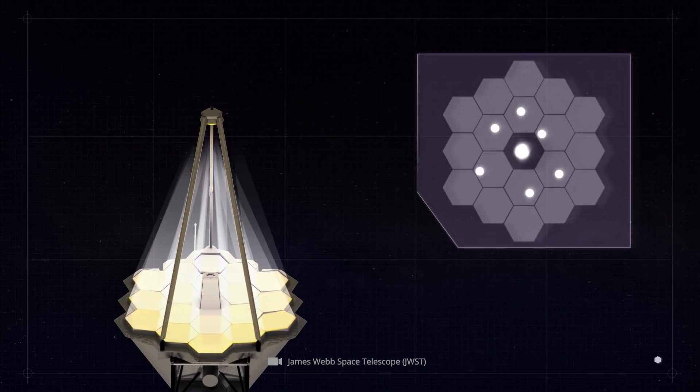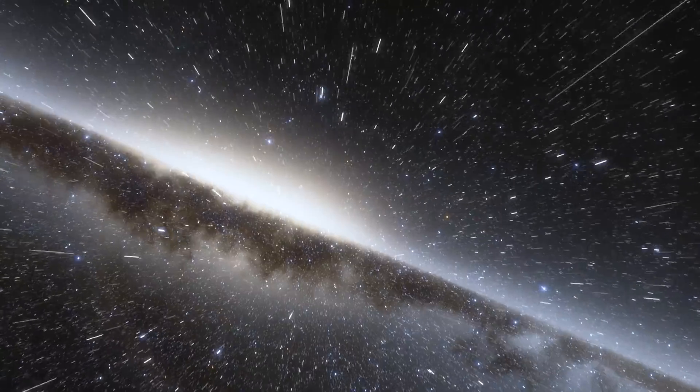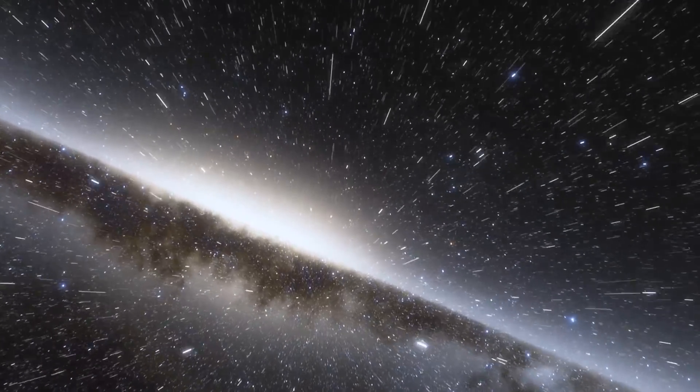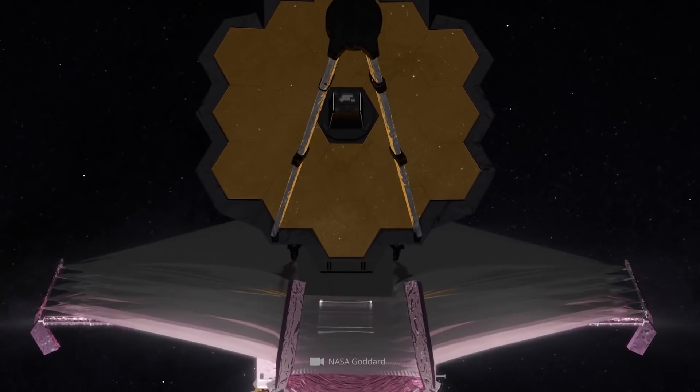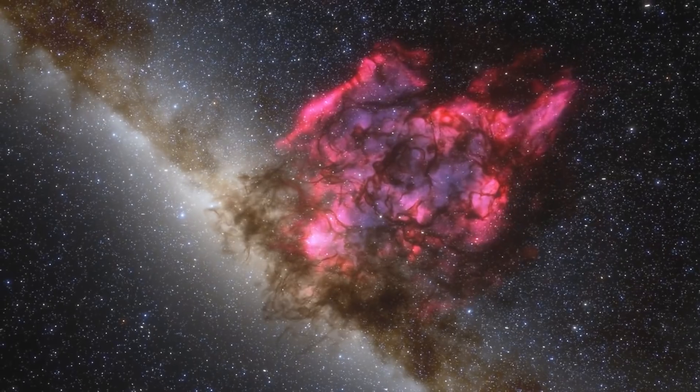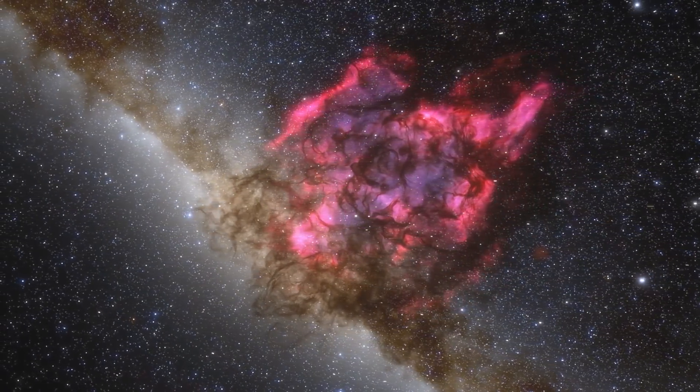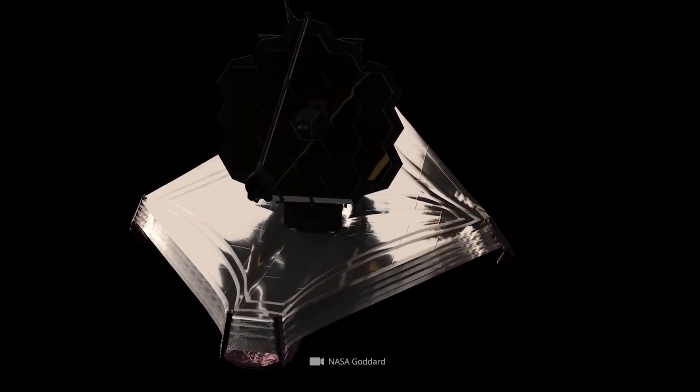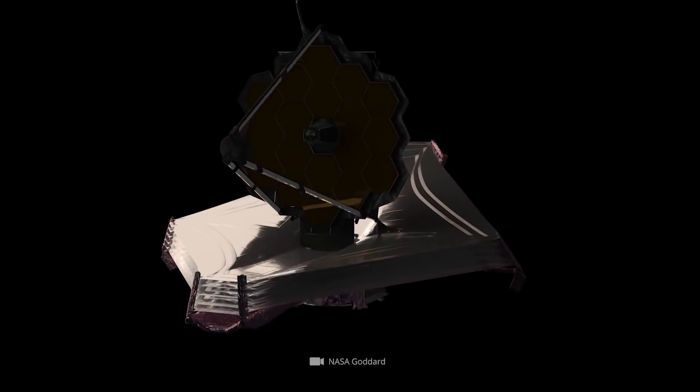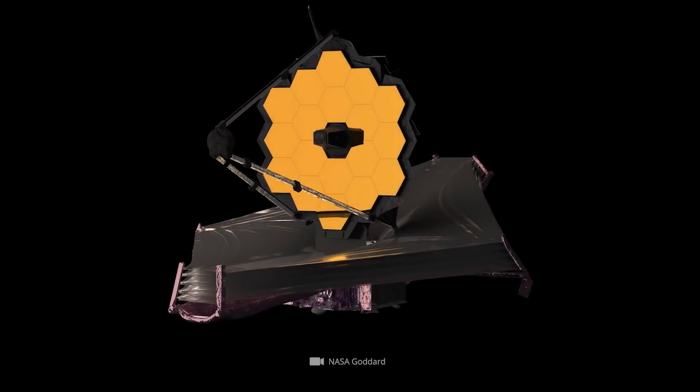The meticulous calibration of the advanced components will still take several months. Provided everything goes according to plan, the most powerful space telescope of all time will begin its scientific observations in June of this year. Why experts expect nothing less than the dawn of a new chapter in space exploration with the deployment of James Webb becomes clear when we consider the precision with which the space telescope will operate.